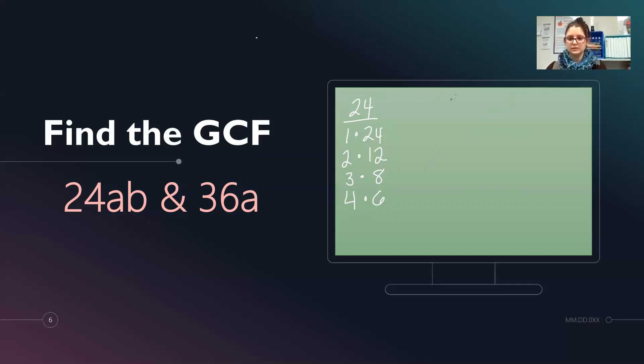Now we're going to list for 36. So we have 1 times 36. 36 is even. So I'm going to use 2. That's 18. 3 plus 6 is 9. So I know 3 will work. That would give us 12. 4 times 9. And then finally 6 times 6. So let's go through and circle our common factors. We've listed the factors. Now let's circle what's common. We've got a 1, a 2, a 3, a 4, a 6, and a 12. So those are all my common factors. But my greatest common factor is 12.